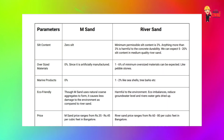M-Sand contains silts, and it is man-made with a uniform particle size. River sand contains around 3% silts, which is considered a perfect and acceptable level for construction use.